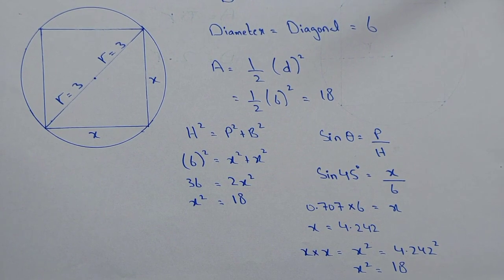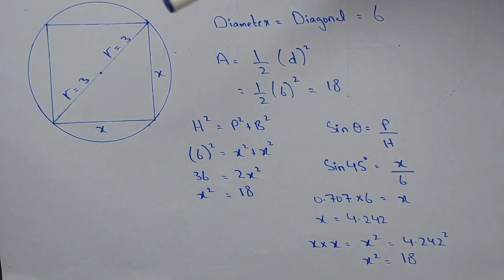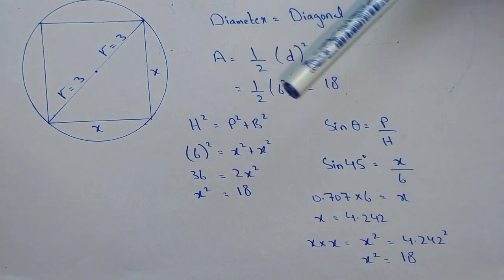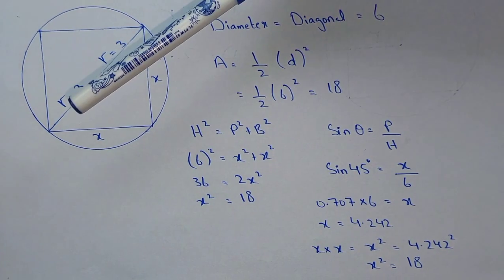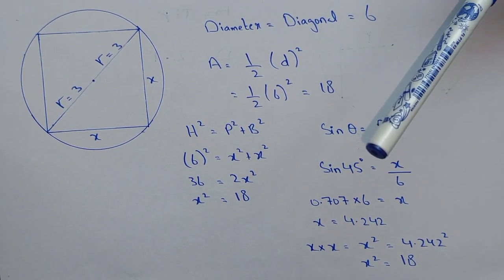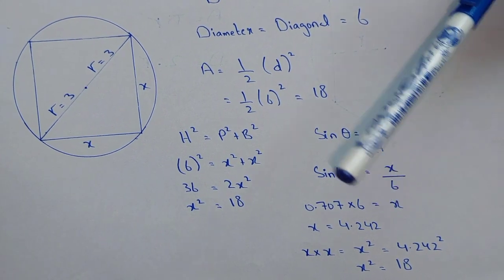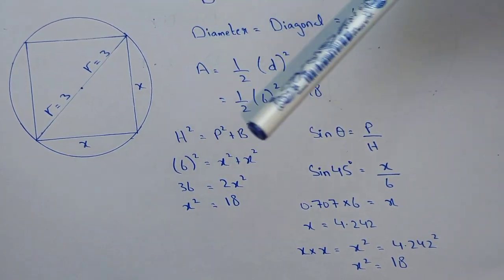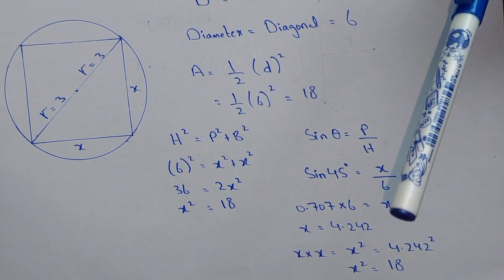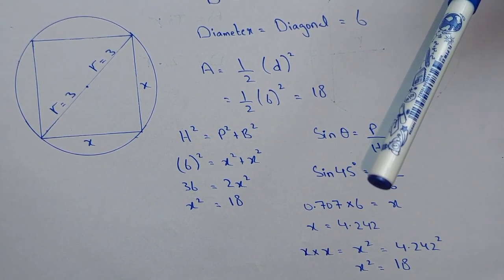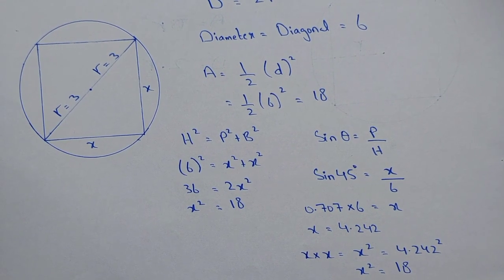Here is another method using trigonometry: sin theta equals perpendicular upon hypotenuse. Here theta is 45 degrees, so sin 45 equals x divided by 6. Sin 45 is 0.707, so multiplying by 6 gives x equal to 4.242. The area of the square is x into x, that is x squared, which is 4.242 squared, giving an area of 18. You may use any of these methods to find out the area of the square.